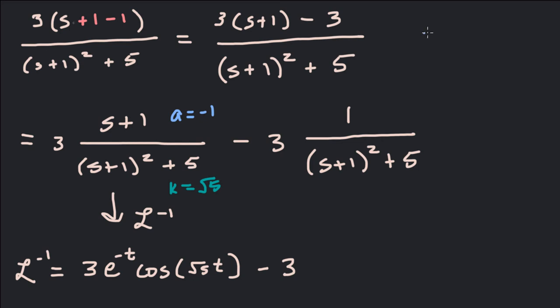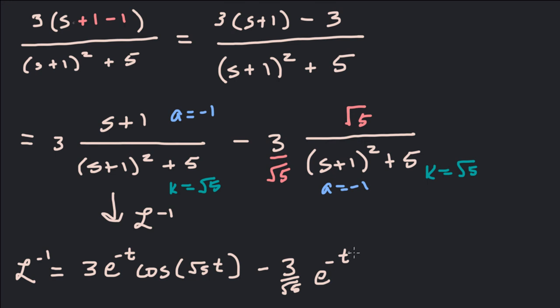Now the second term is a sine transform, and it needs a k in the numerator — and k again is square root of 5, with a equal to negative 1. We don't have square root of 5 in the numerator, so we put it up there and divide out front by square root of 5. Now this is exactly the sine form, giving us minus 3 over square root of 5 times e to the negative t sine of square root of 5 times t.